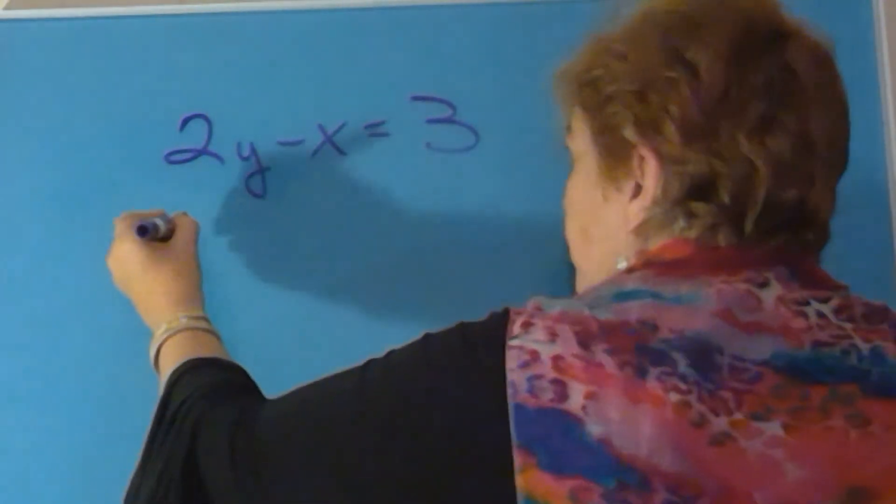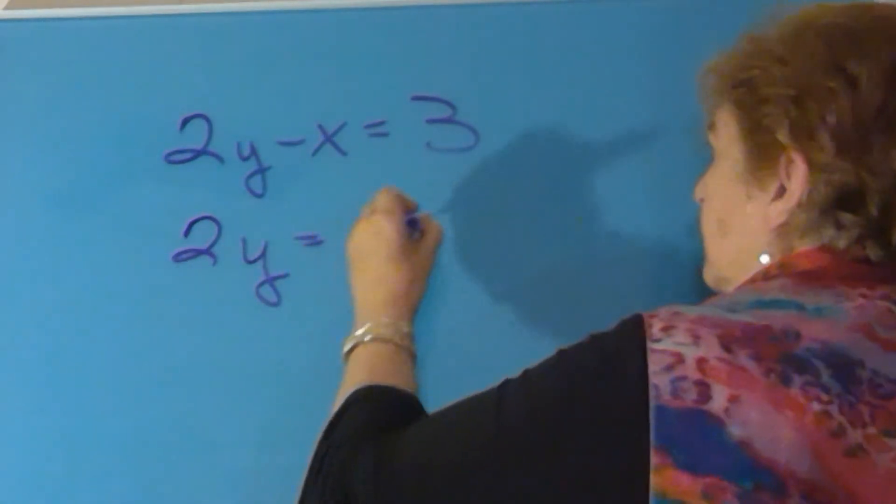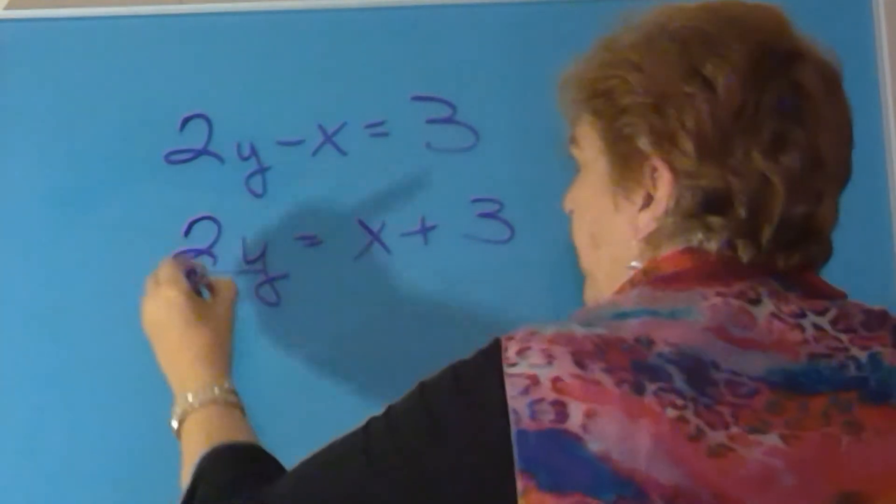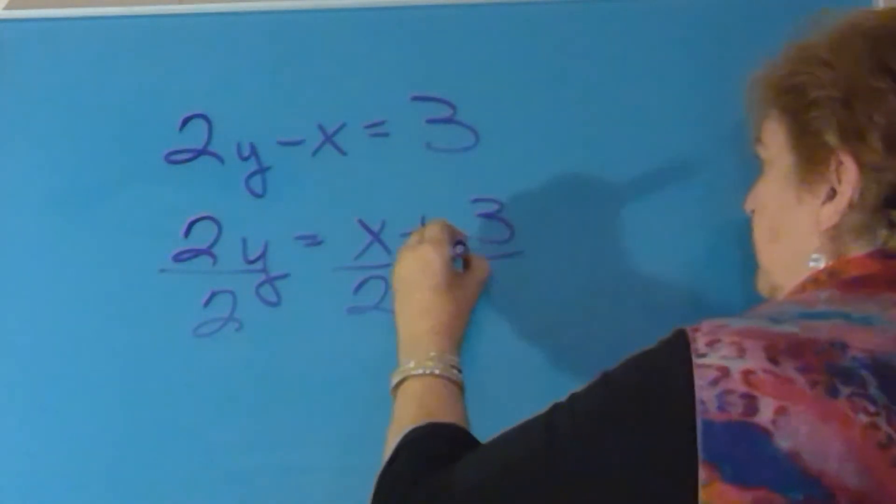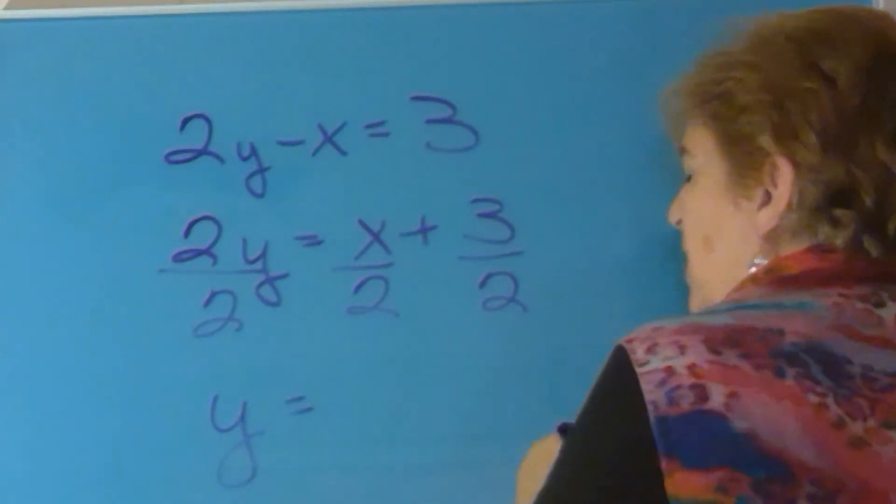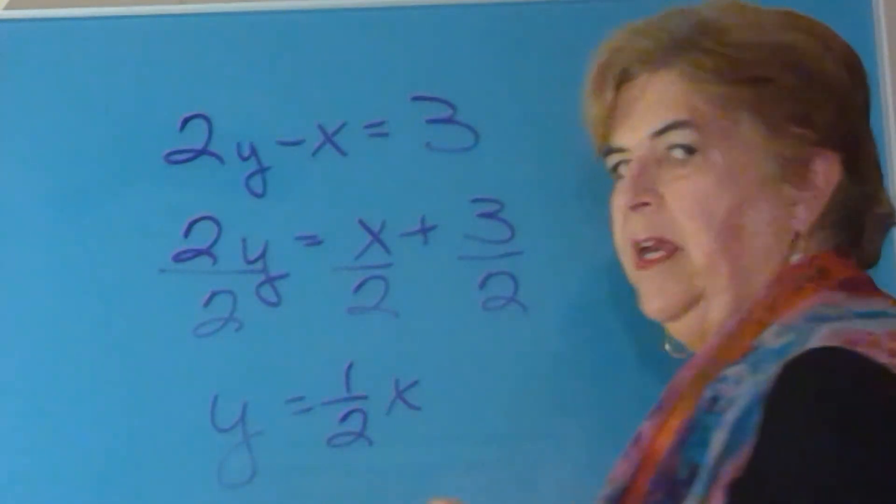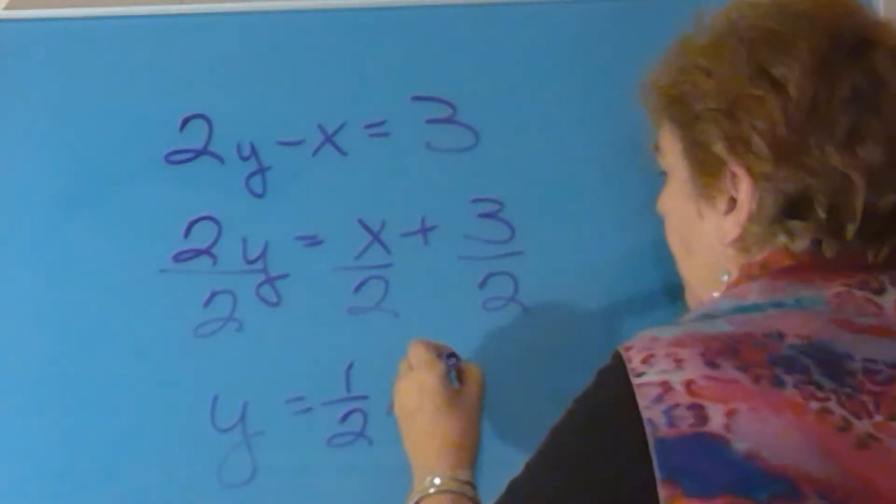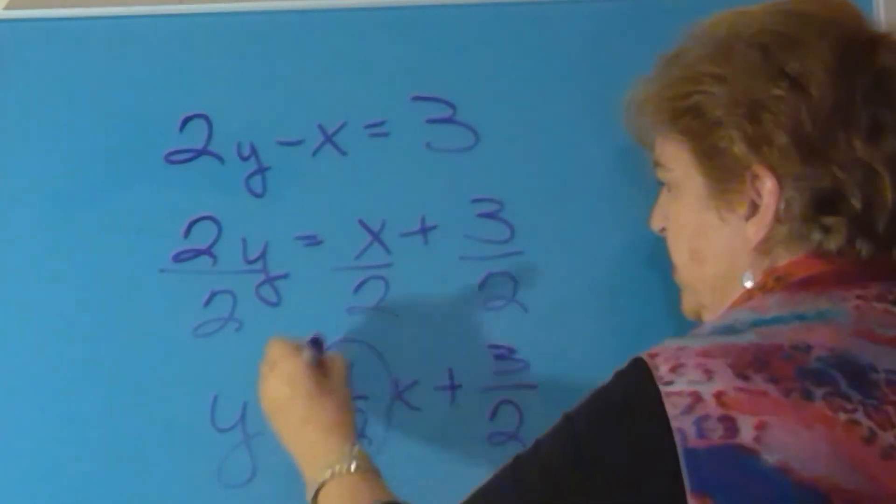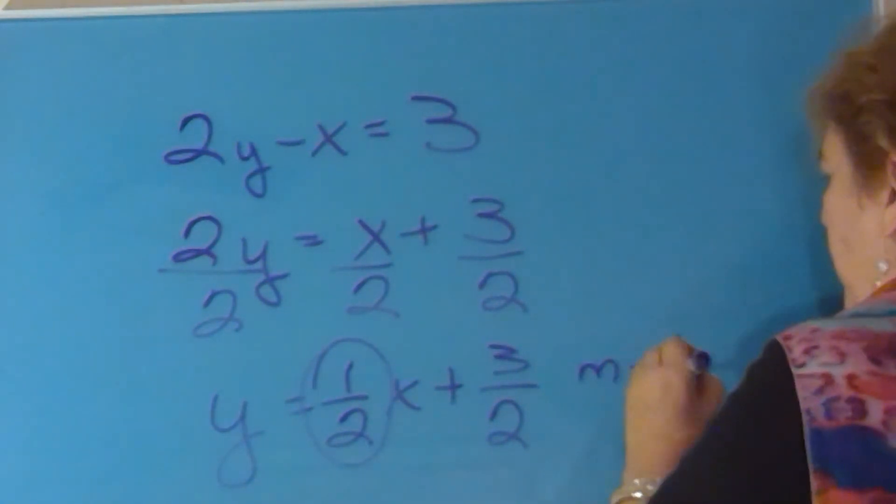So if I solve this for y, the first thing I'm going to do is add x to both sides. And then I'm going to divide by 2. That gives me y equals, and it's probably better to write that as 1 half x. That's the same as x over 2, plus 3 halves. Now this line has a slope equal to 1 half.